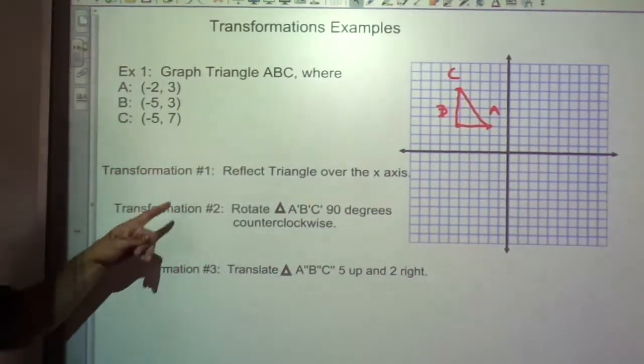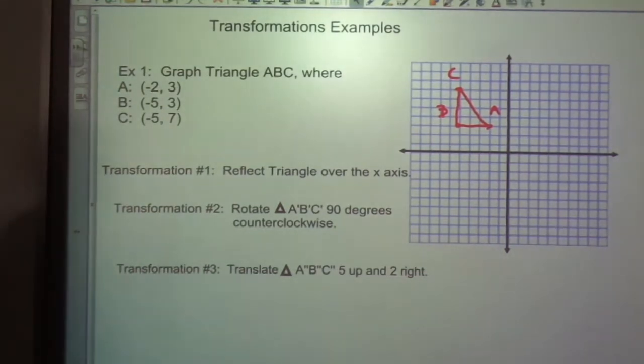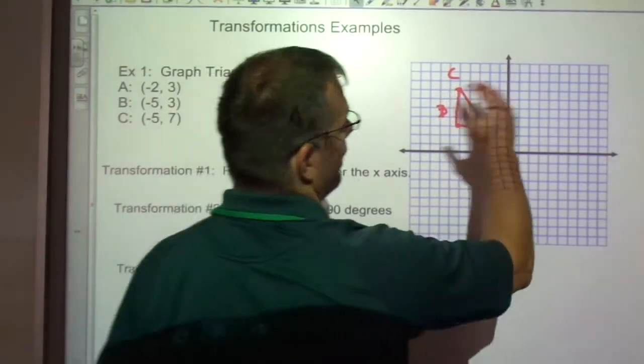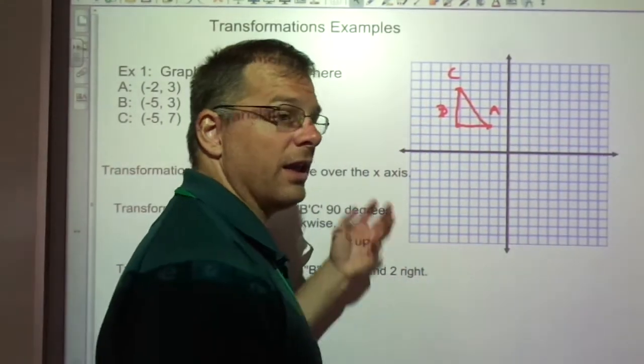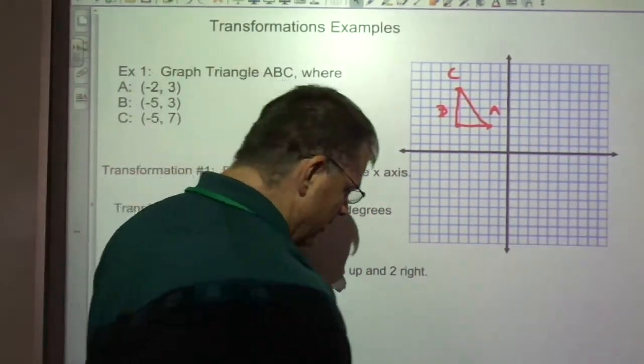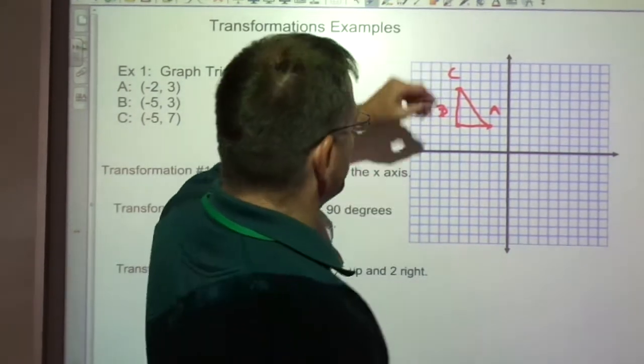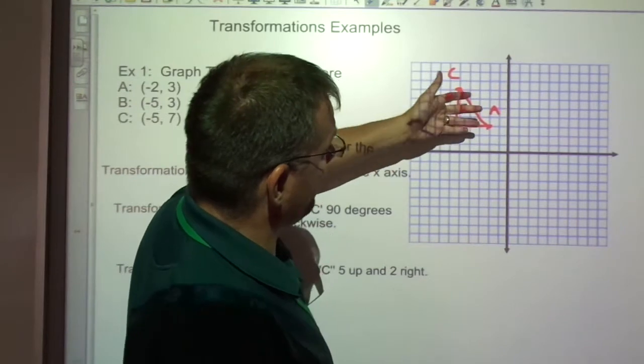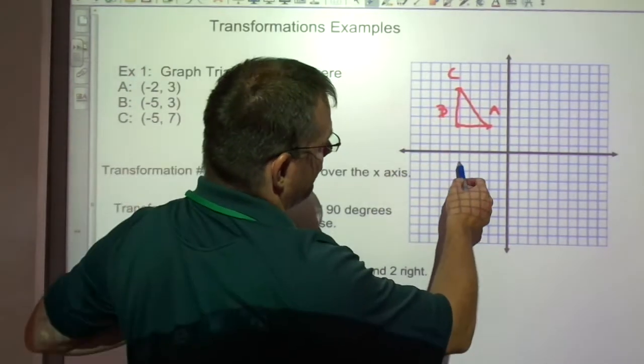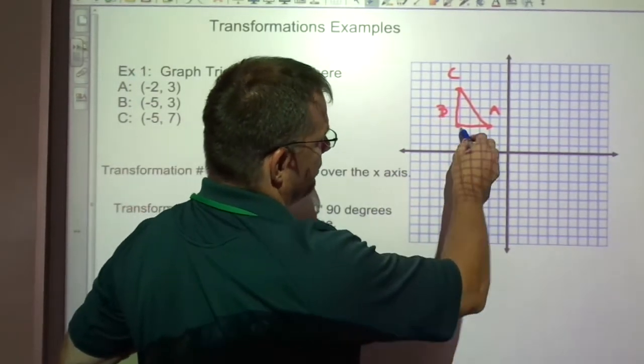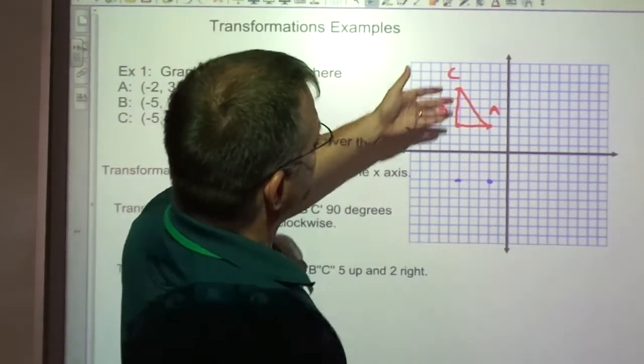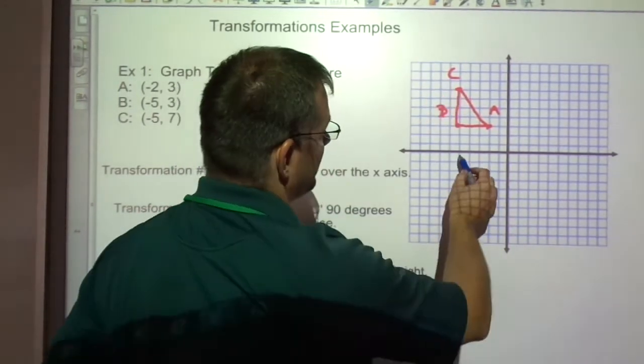My first job is to reflect the triangle over the x-axis. You can reflect it over the x-axis, you could reflect it over the y-axis, you could reflect it over a line like x equals something or y equals something. But for the x-axis reflection, probably the easiest way to think about it is, this is 3 above the x-axis. So if I flip it, it's going to end up 3 below the x-axis.